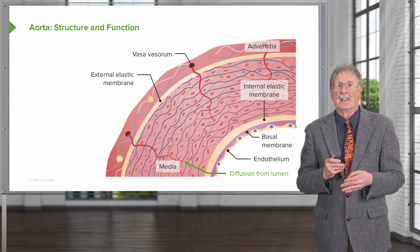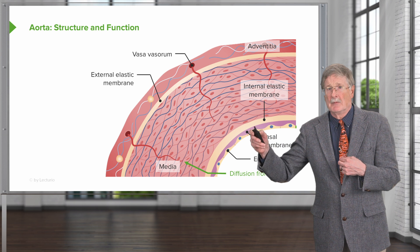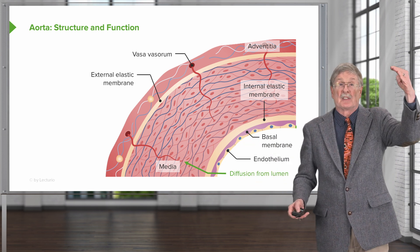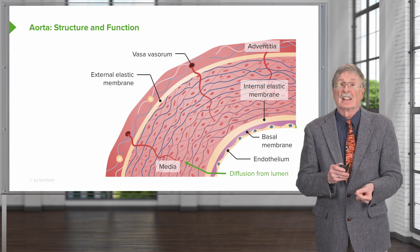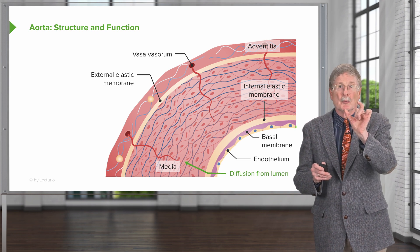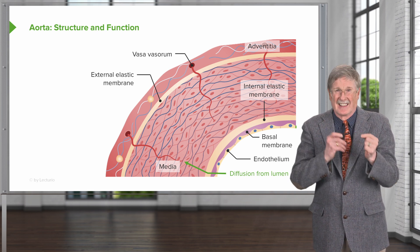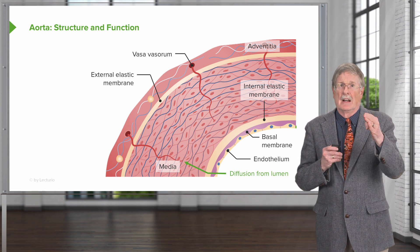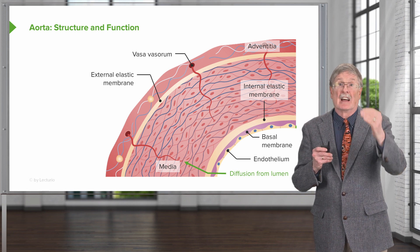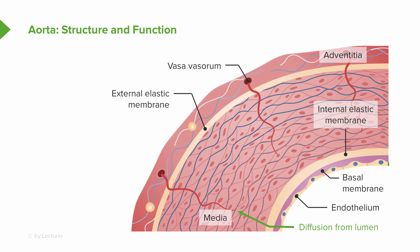Let's look at this in a slightly different way — in cross-section. Going from the inside, which is the lower right-hand corner, to the outside, which is the upper left-hand corner, we have an endothelium sitting on a basal membrane, an internal elastic membrane, and then we have this very thick-walled media with lots and lots of smooth muscle cells interspersed with connective tissue, elastic tissue, and type 1 and type 3 collagen. We'll have an external elastic membrane and then the adventitia, which contains the vessels of the vasovasorum. You see them as those little red snaky lines coming in to the outer two-thirds of the media.